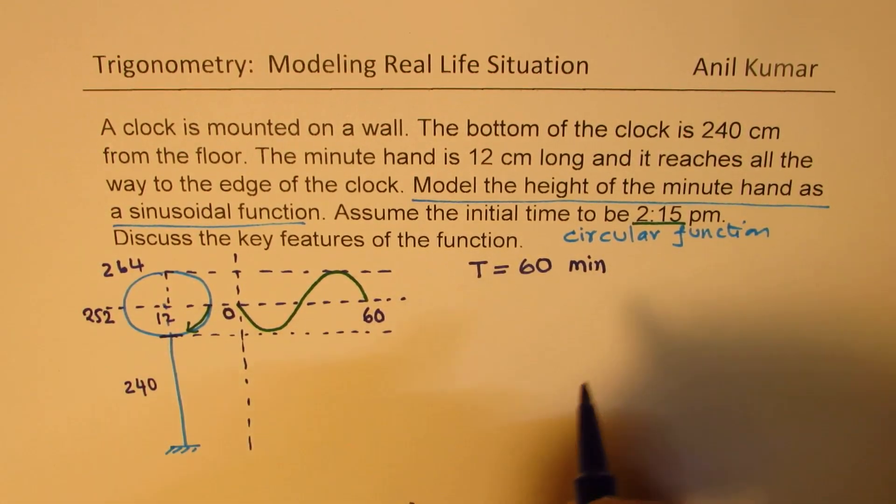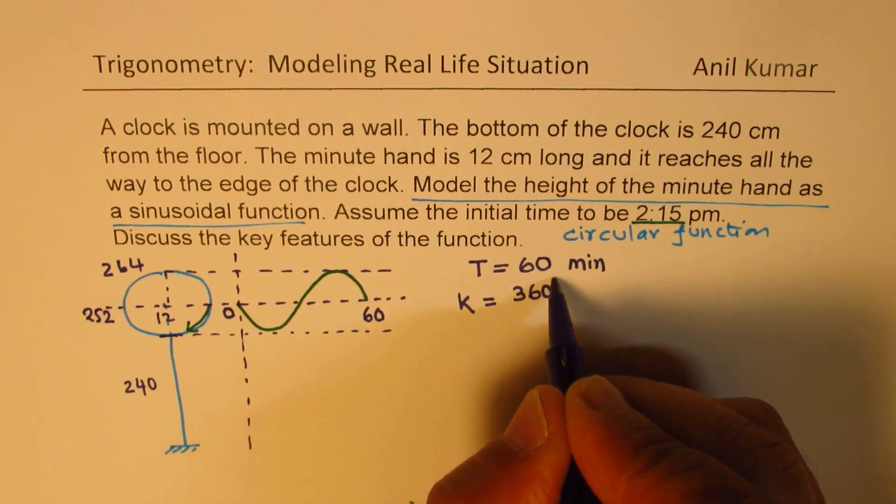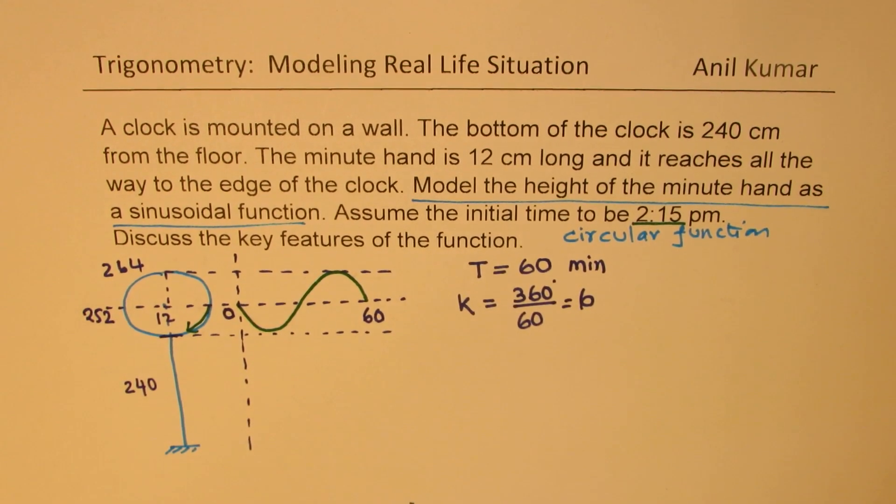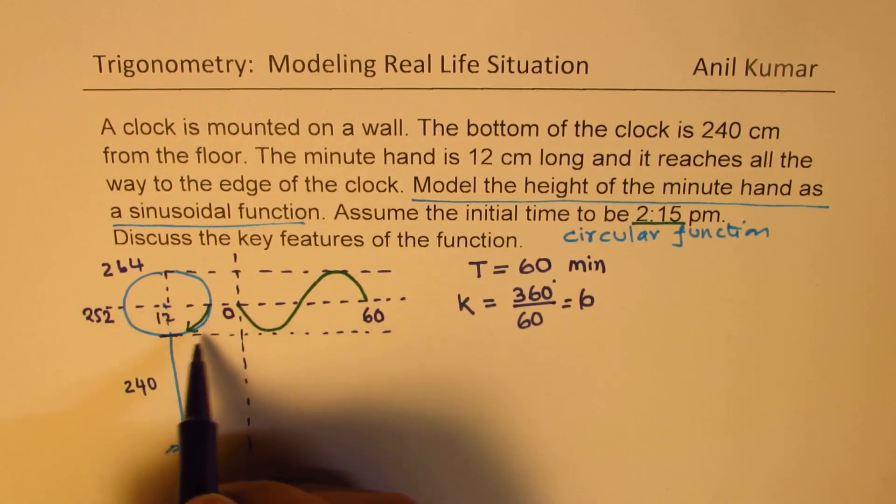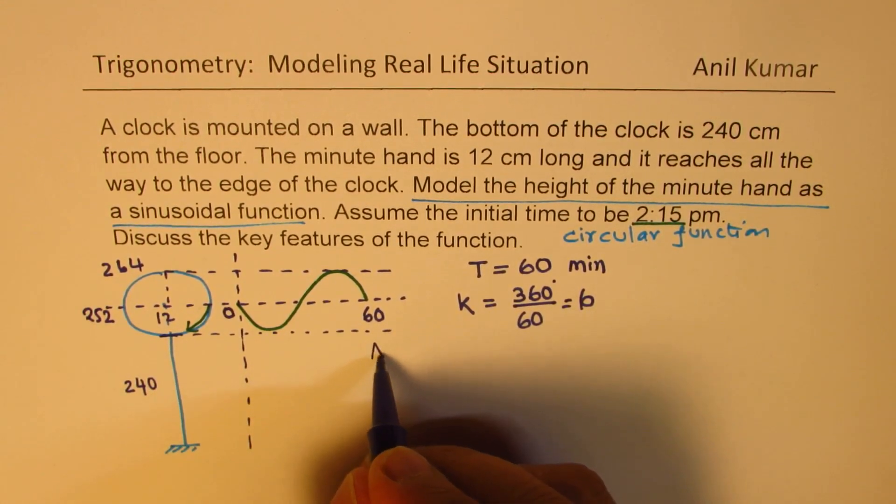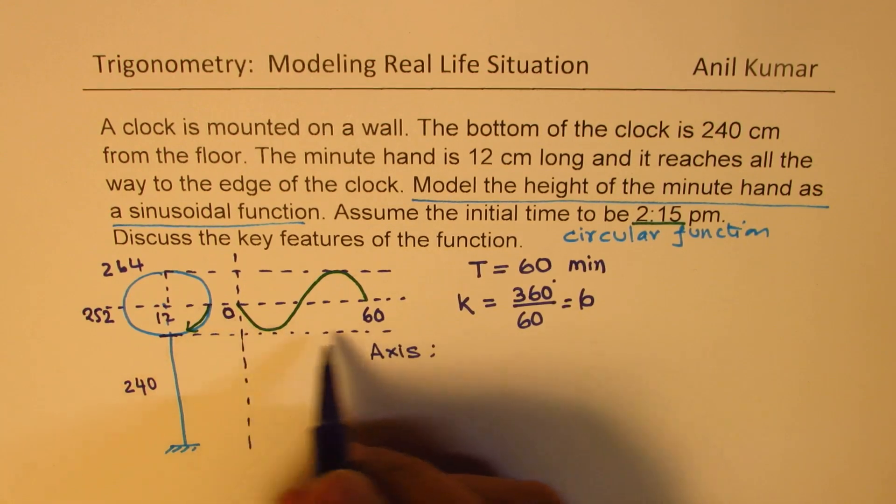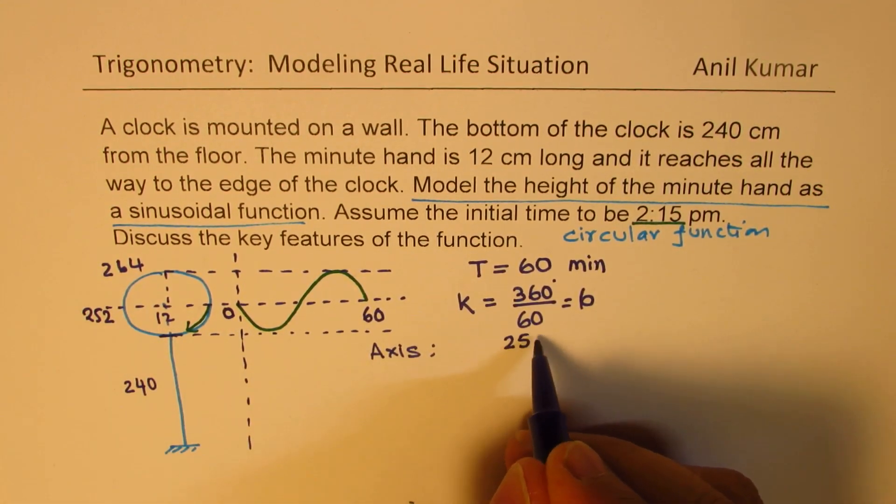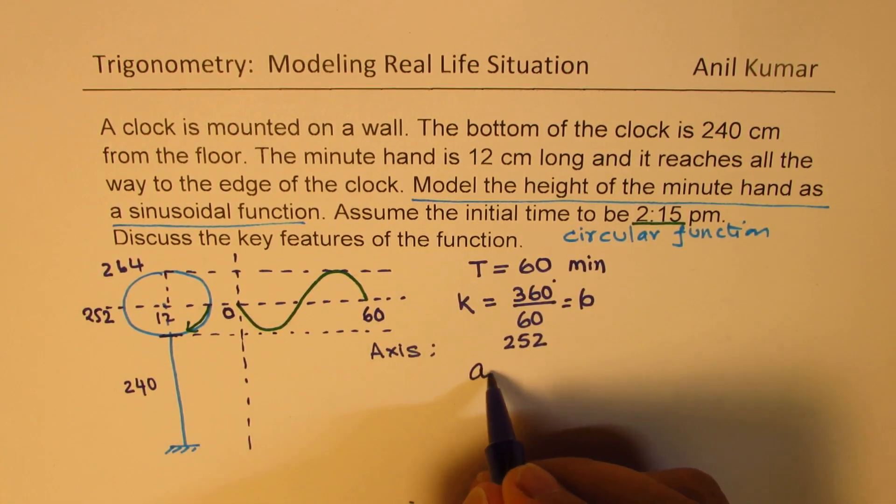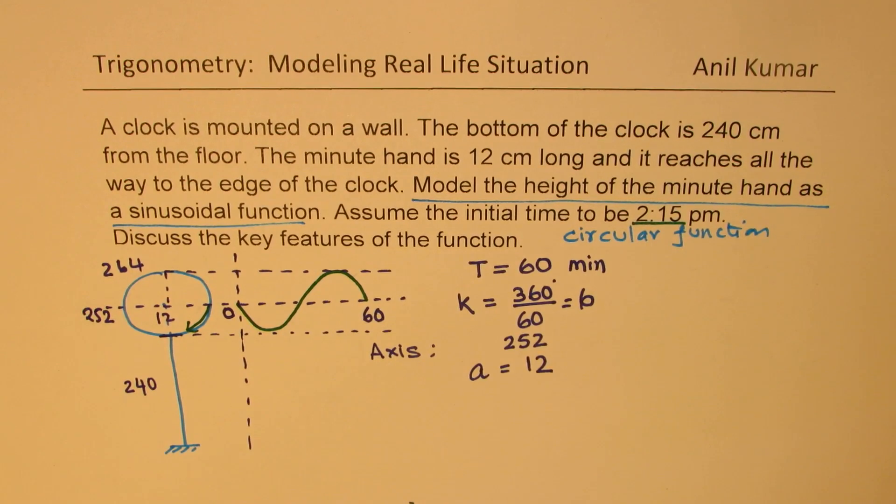From the time period, you can actually calculate the value of k. So, k will be 360 degrees divided by 60, and that gives you 6. The mounting itself is above the ground, and the center is 252. So, the axis is at 252. The amplitude A will be the length of the minutes arm, which is 12 units.